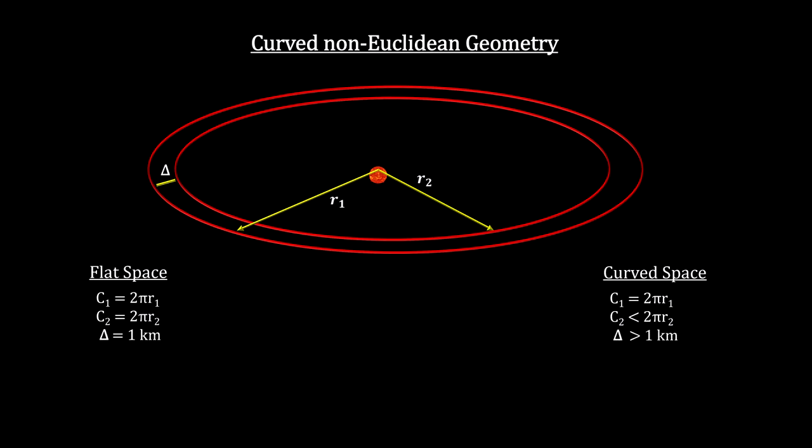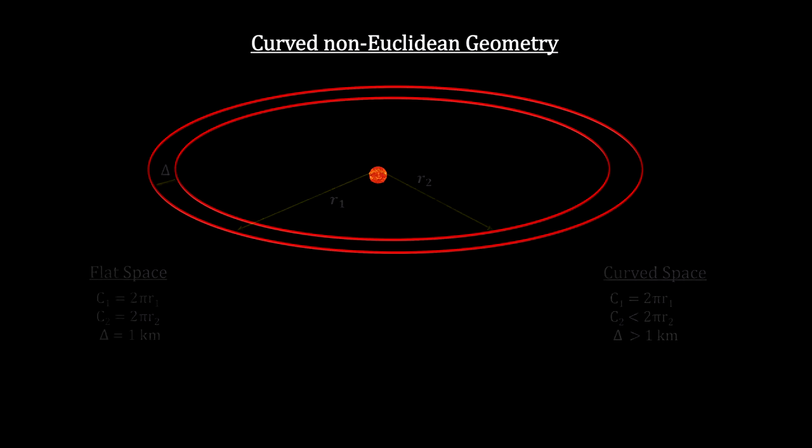Which means that the distance between the circumferences would be greater than the one kilometer difference in the radii, but only a little.